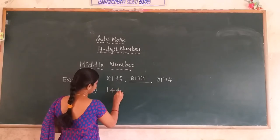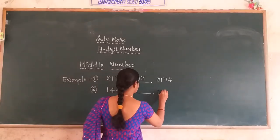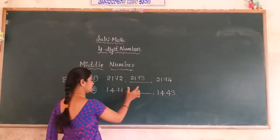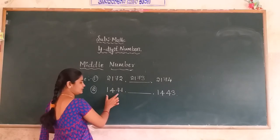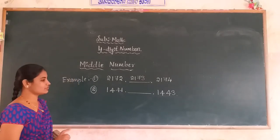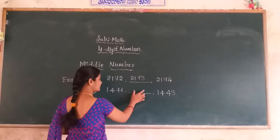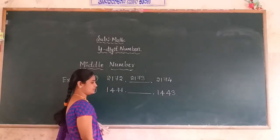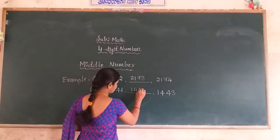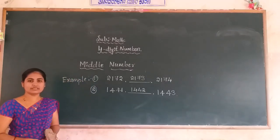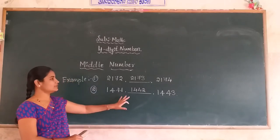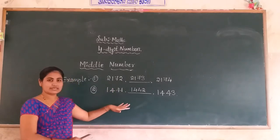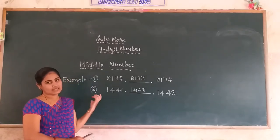Example 2: 1441 and 1443 are given. These two numbers are already stated — the preceding and succeeding numbers. Find the middle number of these two numbers. Observe the last two digits: 41 and 43. The middle number between them is 42. Therefore, 1442 is the middle number of the given series. All students understand: when the preceding and succeeding numbers are given, find the between number — that is the middle number.